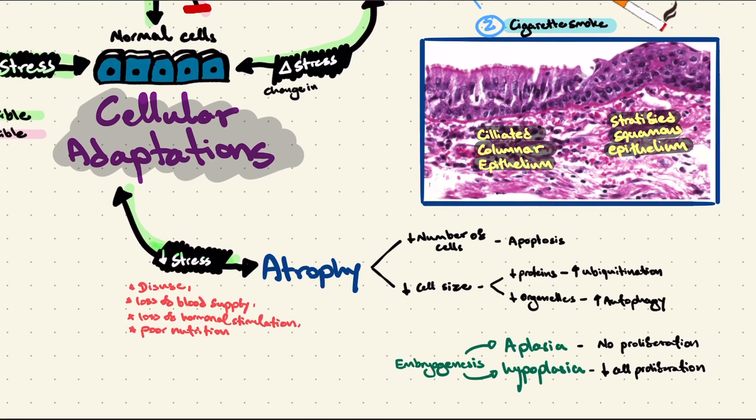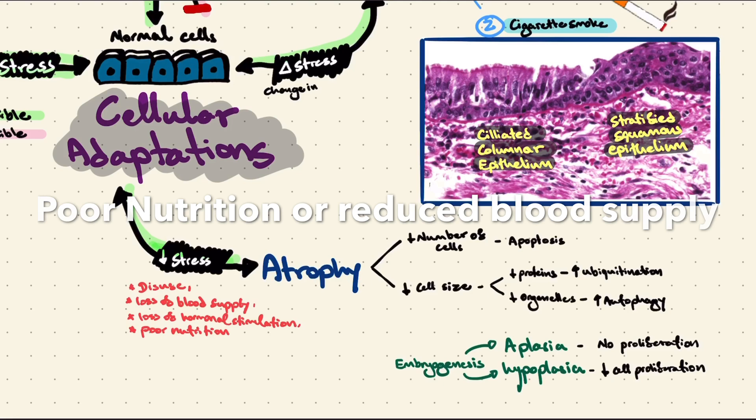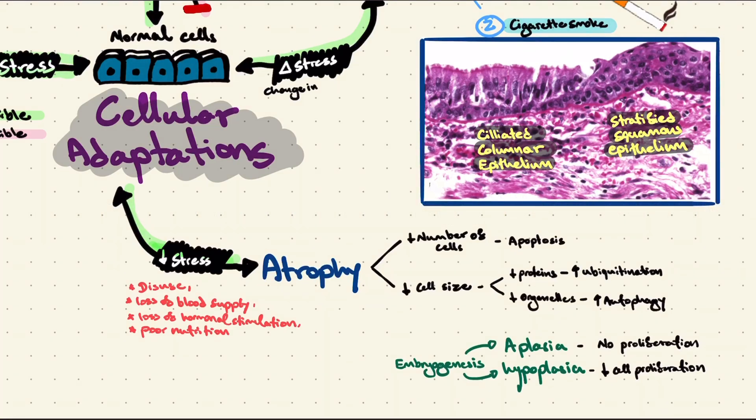Your cells need energy to stay alive. If you remove the stress — for example, you stop going to the gym — then your body doesn't need those huge muscles that take up so much energy, so these muscles will undergo atrophy to save energy. Another example is if you can't provide your cells with the required energy, for example with poor nutrition or reduced blood supply — that tissue will undergo atrophy to reduce energy requirements.